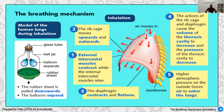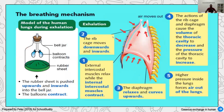To recap inhalation: the rib cage moves upward and outward, the external intercostal muscles contract, the diaphragm flattens. Because of the pressure difference — increased volume, decreased pressure inside — air is drawn into the lungs. This happens quite quickly compared to exhalation.